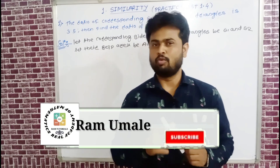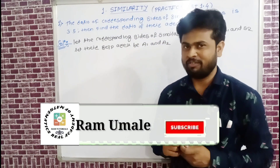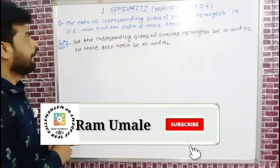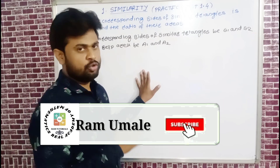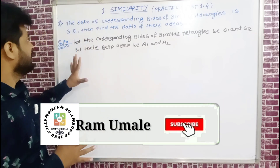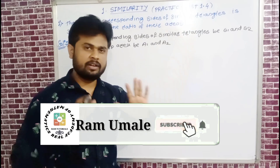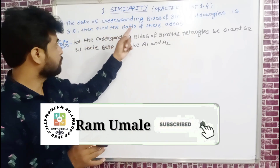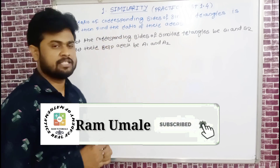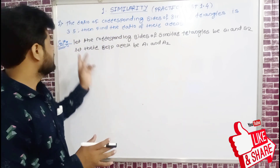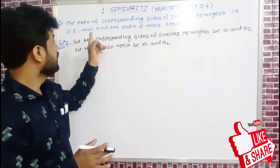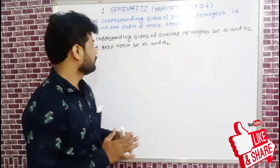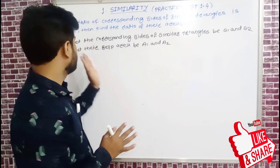Welcome back to Ramu Malayat channel. We are doing Practice Set 1.4, Question number 1, first chapter Similarity, Class 10th. The ratio of corresponding sides of similar triangles is 3 ratio 5. You have to find the ratio of their areas.